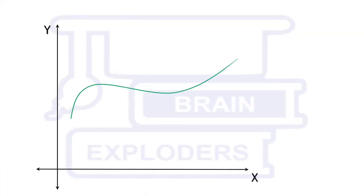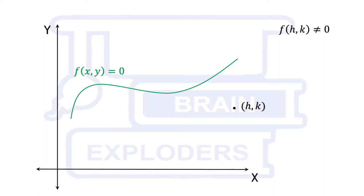Suppose there is a curve f(x,y) = 0 on the Cartesian plane. If there is any point (h,k) on this plane which does not lie on this curve, then the coordinates of this point do not satisfy the equation of the curve — that is, f(h,k) is not equal to zero. On the other hand, if (a,b) lies on this curve, then the value of f is also zero.